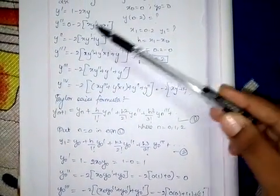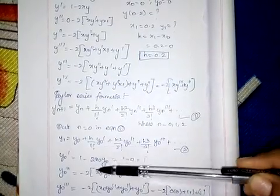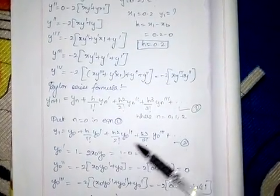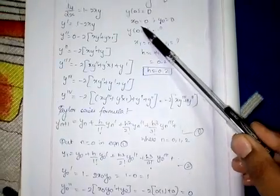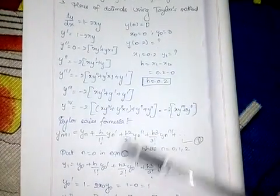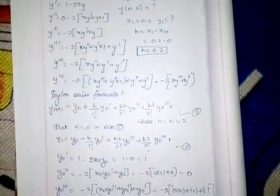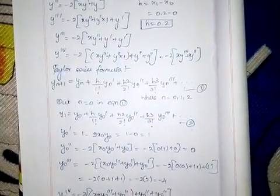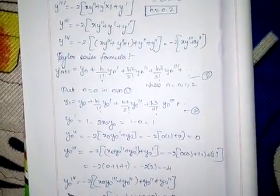By substituting x0 equals 0 and y0 equals 0, we get y'0 equals 1, y''0 equals 0, y'''0 equals minus 4, y''''0 equals 0.